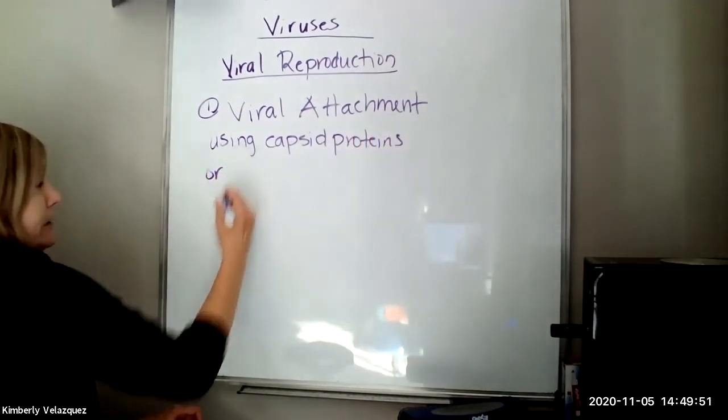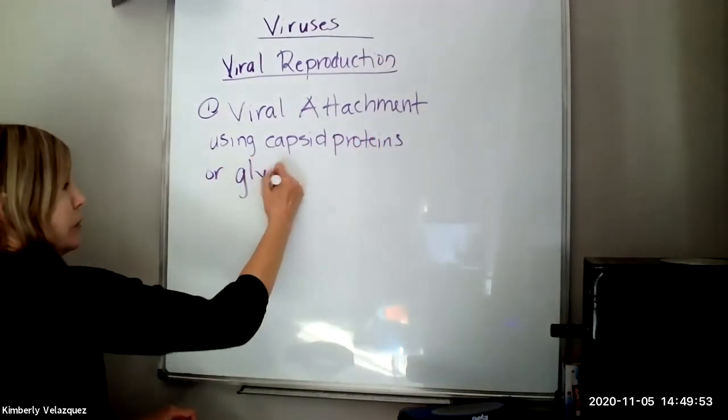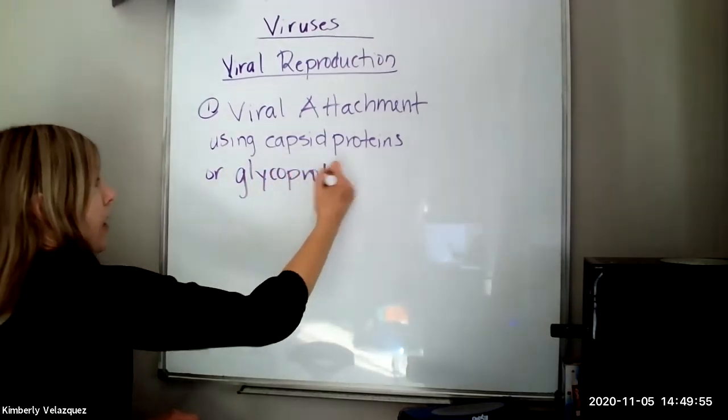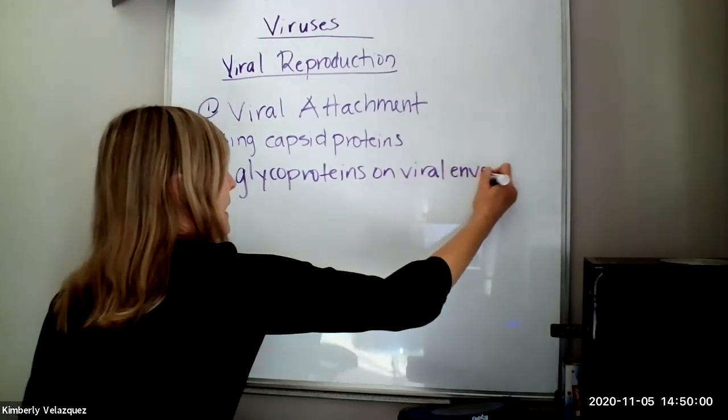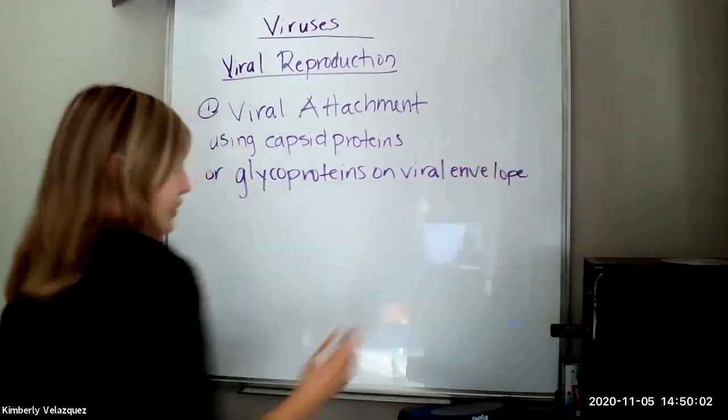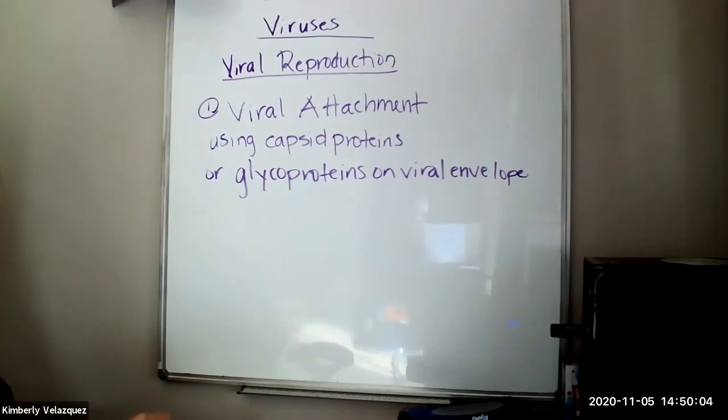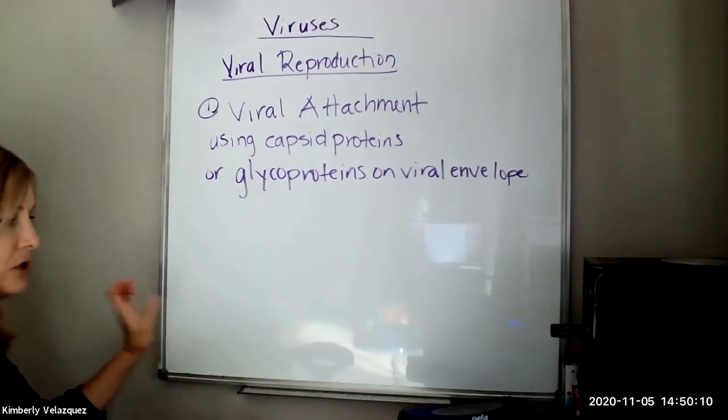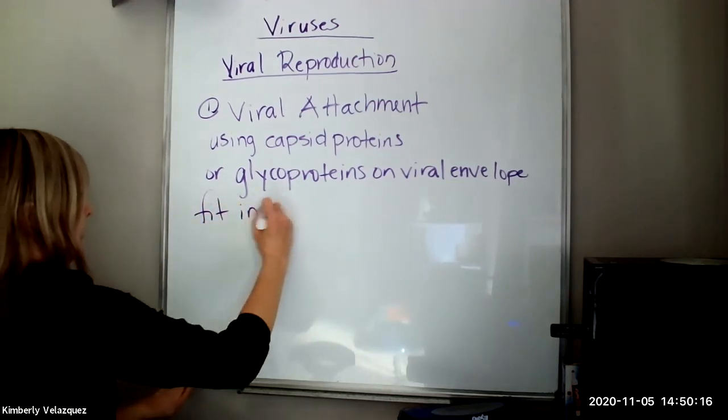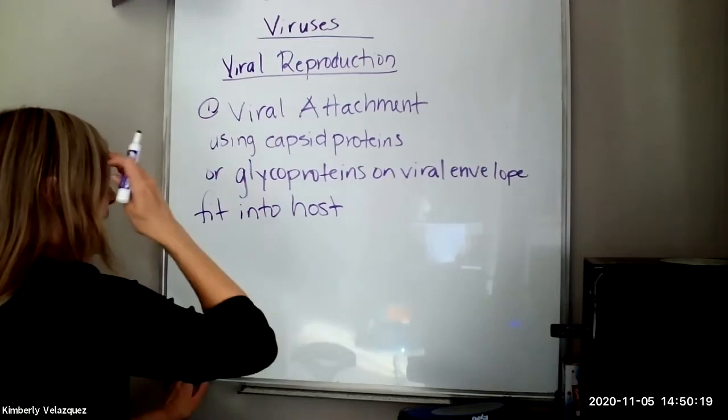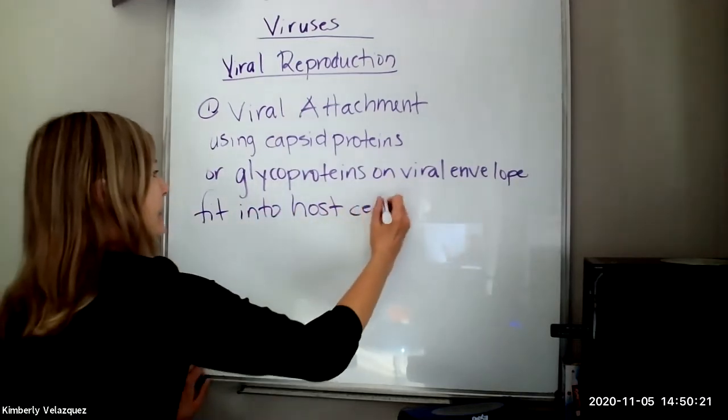If it is what we call a naked virus that doesn't have an envelope, or glycoproteins on the viral envelope. And just by bad luck for the host cell and good luck for the virus, those proteins can perfectly fit into receptors on the host cell surface.